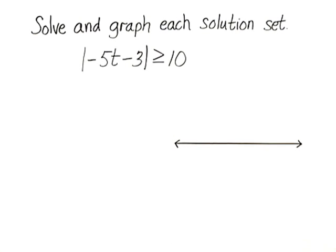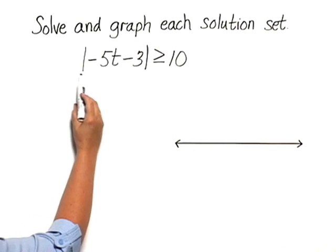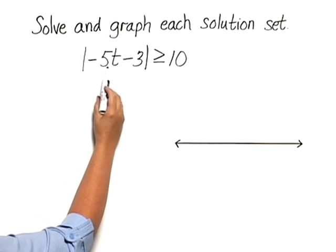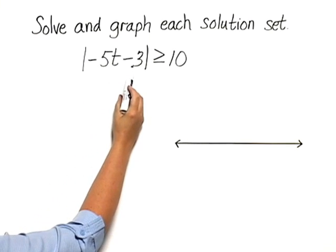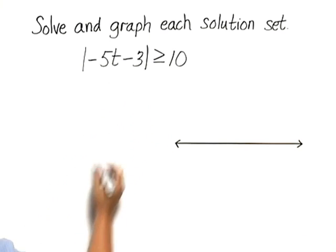Solve and graph each solution set. We have the absolute value of negative 5t minus 3 is greater than or equal to 10.